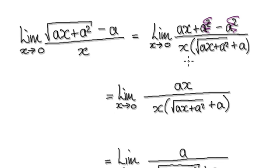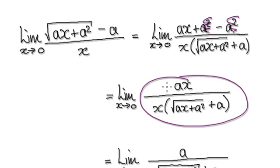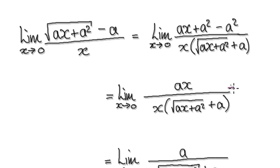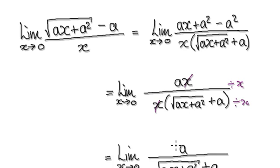The two a squared cancel each other out. That will then give you this. And then divide top and bottom by x. So that will then give us this.